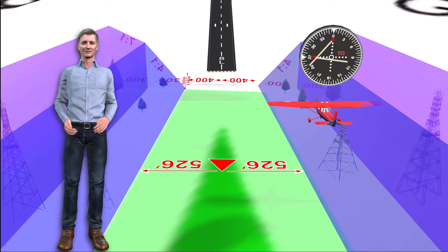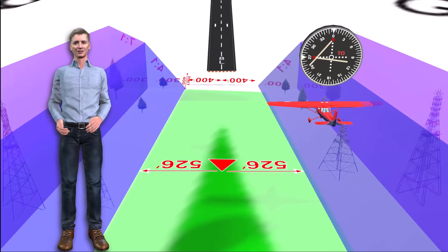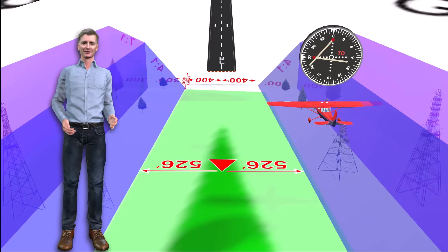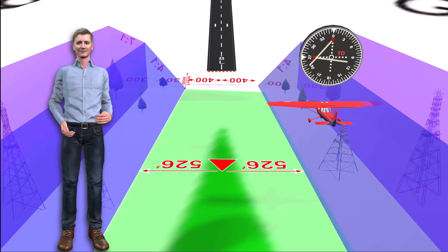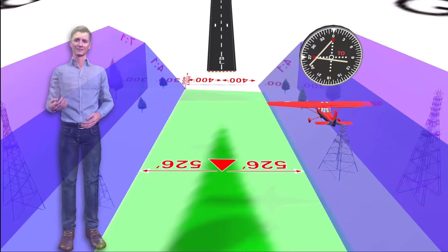Of course, there are many variables that might affect this obstacle-protection geometry, but it's clear that tracking the course centerline on any approach, especially an ILS approach, is very important to ensure flight safety.